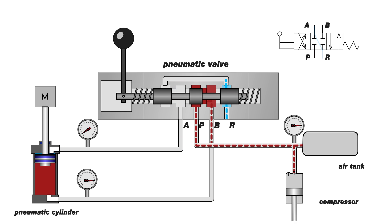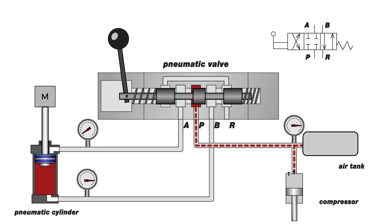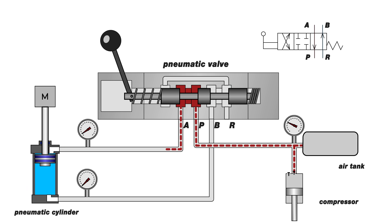When switching the valve to the opposite position, compressed air will move from the compressor to the rod cavity, and the piston cavity will connect to the atmosphere. The rod will retract.